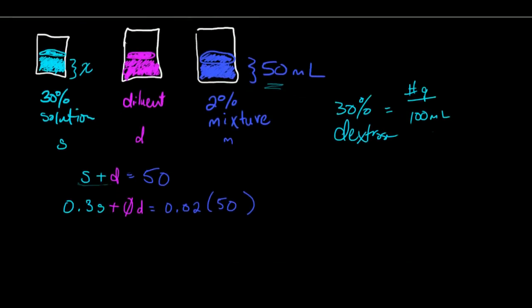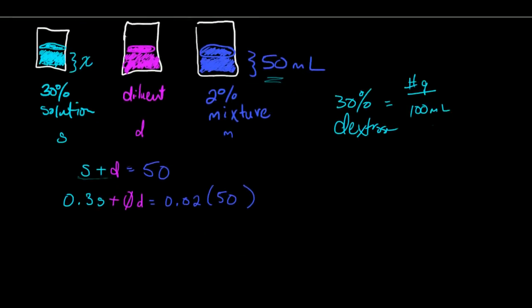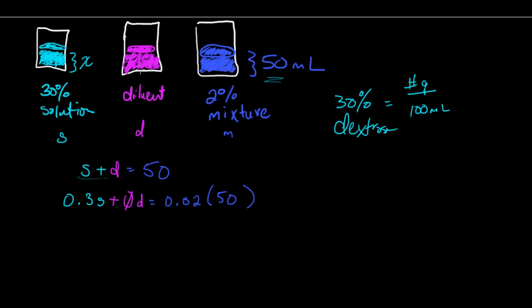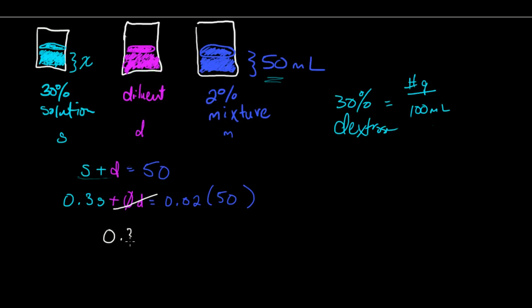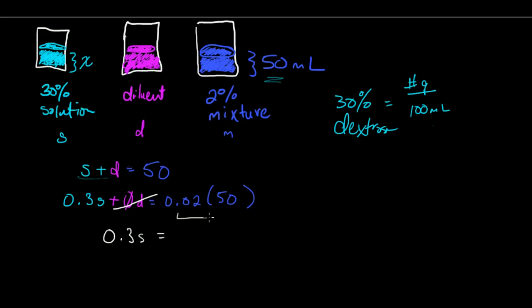And so here we have an interesting thing and this is going to lead us to how to look at these ongoing. Notice when I'm diluting I have absolutely no dextrose in my diluent. So what happens to my diluent? It just goes away. We don't care about it. So really the most interesting part is the 0.3S equals 0.02 times 50.